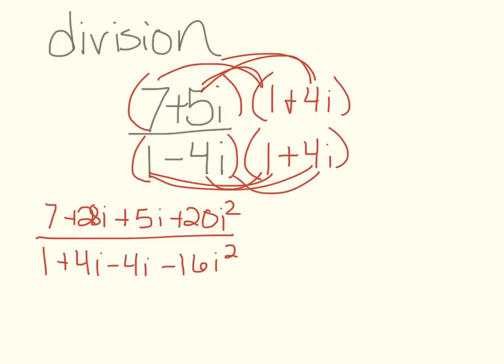So then we clean it up a little bit. I'm just going to take this plus 20i squared, cross it out, and write minus 20, because I know the i squared is negative 1. And I'm going to take this minus 16i squared, and I'm going to cross it out, and write plus 16, because minus minus becomes plus.